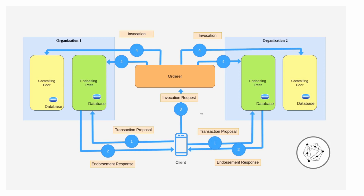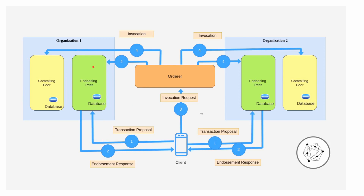Before that, let's go through our network setup. Our network has two organizations — Organization 1 and Organization 2. Each organization has a single endorsing peer, and both peers are also committing peers because they maintain the current state database. Every transaction is committed on each peer, so each organization has two committing peers and one endorsing peer. The endorsing peer and committing peer can be the same.